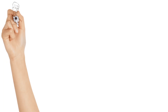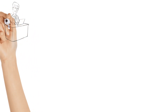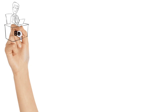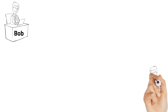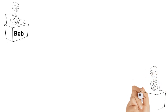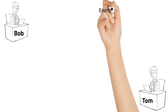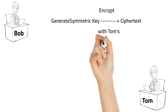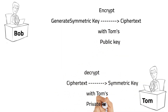PGP also uses symmetric key encryption to encrypt the message content. A random symmetric key is generated first for each message, and the message contents are encrypted using the symmetric key. The symmetric key is then encrypted with the recipient's public key and sent along with the message to the recipient.